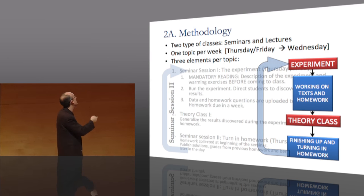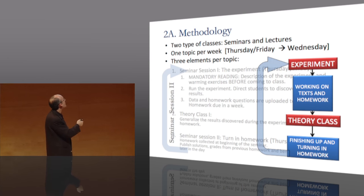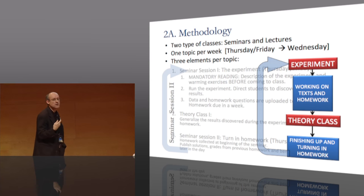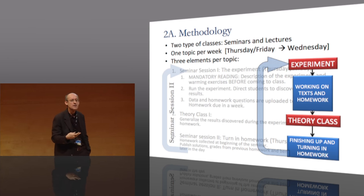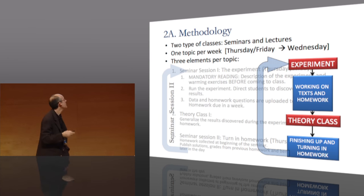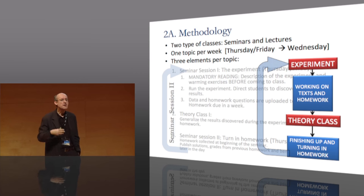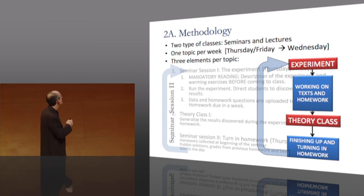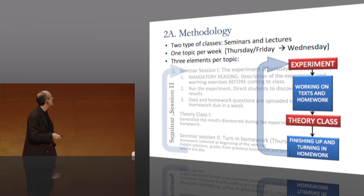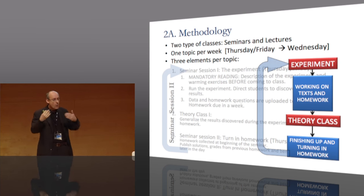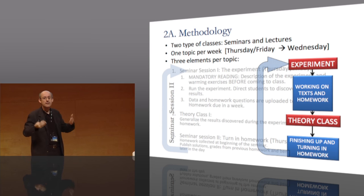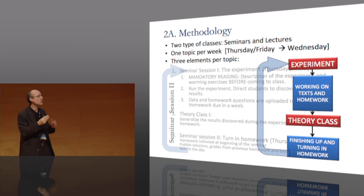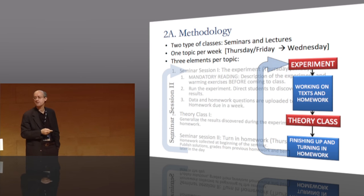This is the methodology — the experiential part. First, they experiment on themselves, living a situation that replicates what they want to learn. Second, they work on the texts and homeworks, thinking about what they observed. Then we tell them we can generalize this in the theory class. And finally, they go back and internalize all the doubts and problems they had. Then we continue with the next experiment.